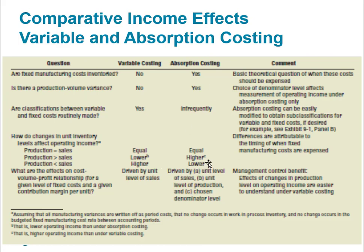When production is less than sales, variable costing income will be higher and absorption costing will be lower, because inventory washes out — coming off the balance sheet under absorption costing and going into the income statement. For cost-volume-profit relationships, under variable costing income is driven by the unit level of sales. Under absorption costing, it's driven by unit level of sales, unit level of production, and the chosen denominator level — which means management has a lot more room to move under absorption costing.